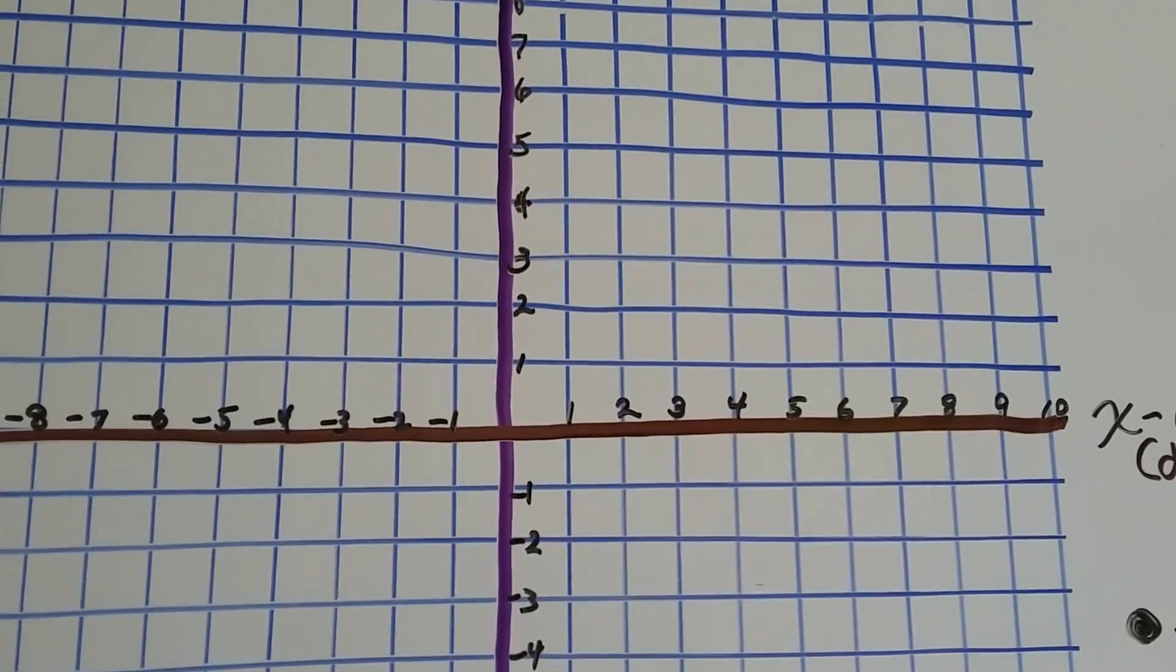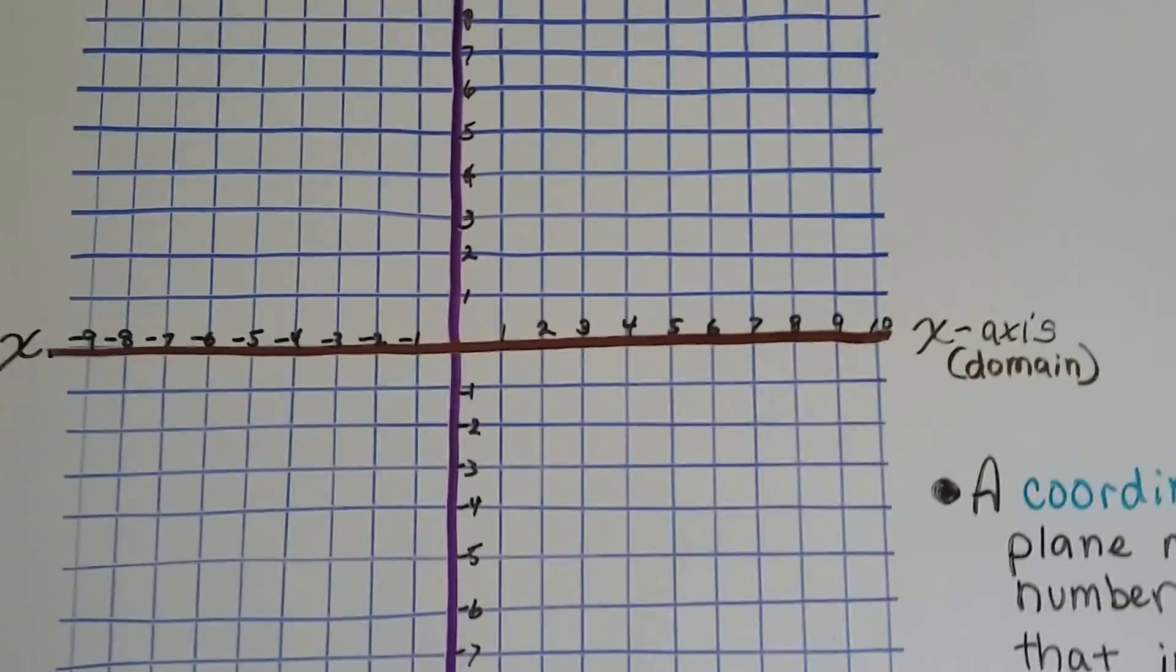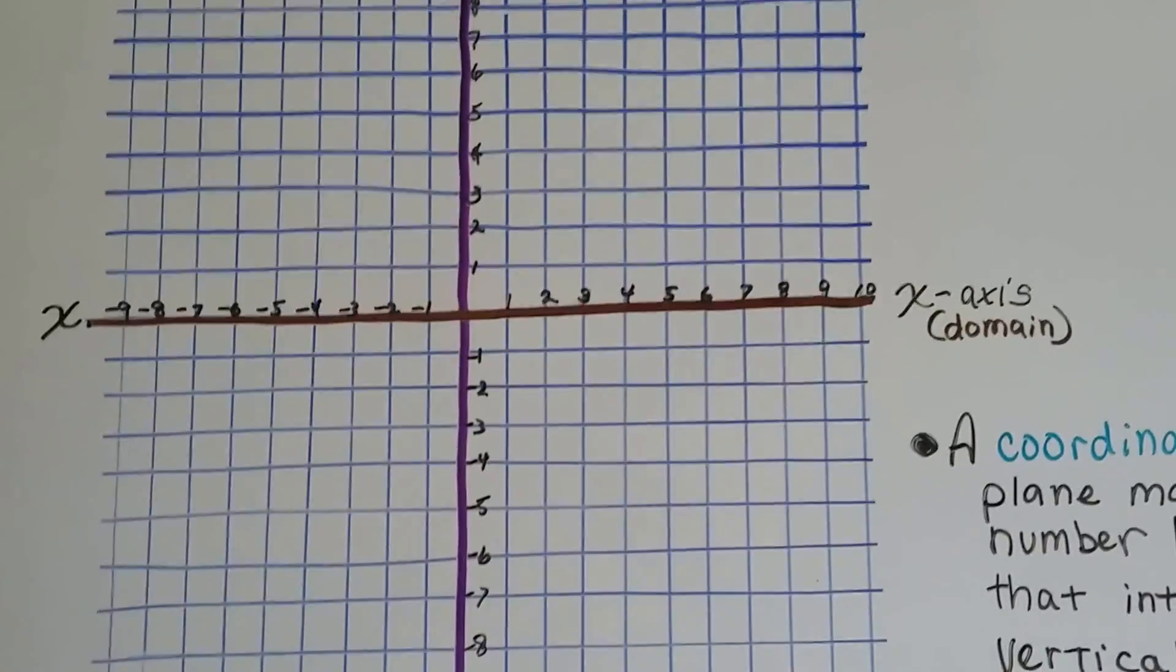It's almost like the grid of city streets. That's the best explanation I've got for it.